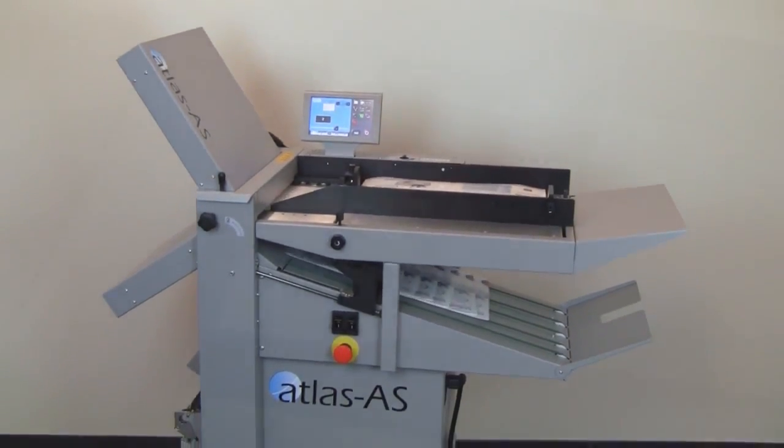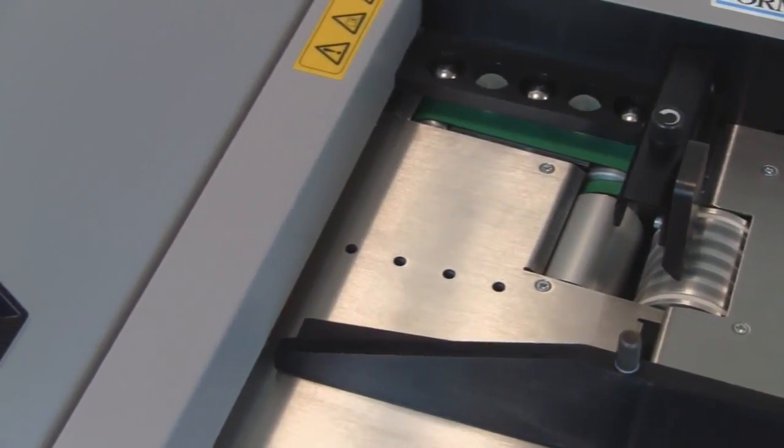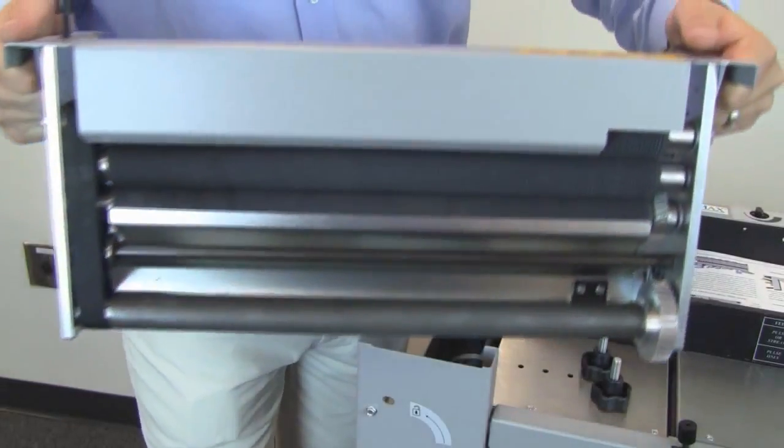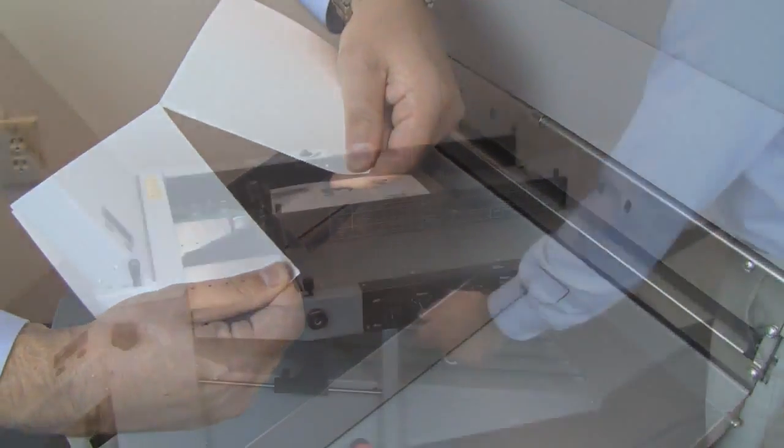Both folders feature a powerful air suction feed table with an alignment deck for consistent accurate feeding of forms, an innovative fold roller access design, and a perforator scorer attachment.